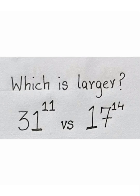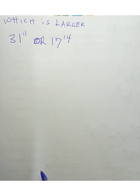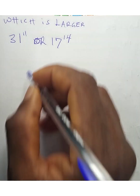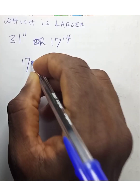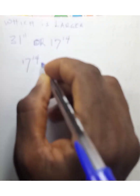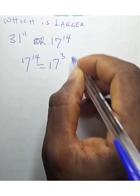Hello friends, welcome to my online class. We are asked which is larger: 31 to the power of 11, or 17 to the power of 14? We can write 17 to the power of 14 as 17 to the power of 3 times 17 to the power of 11.